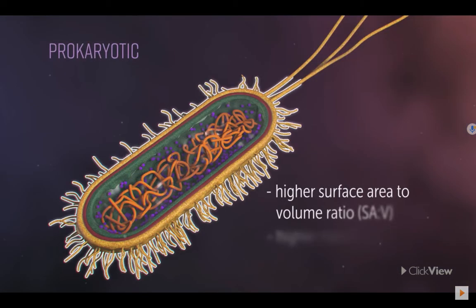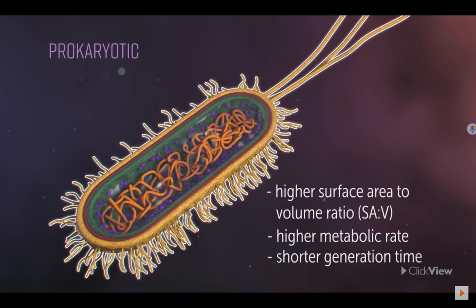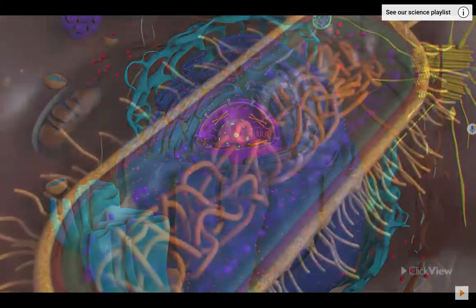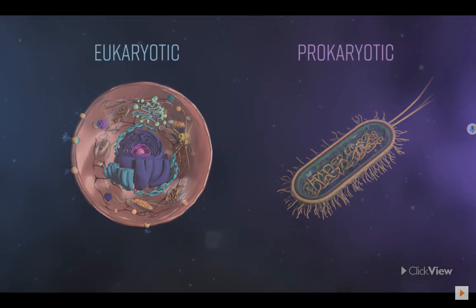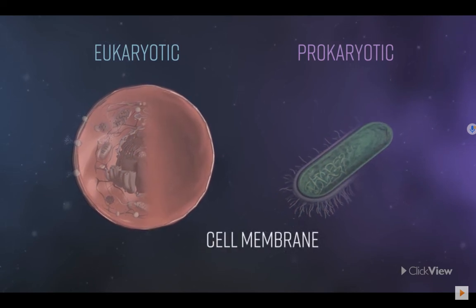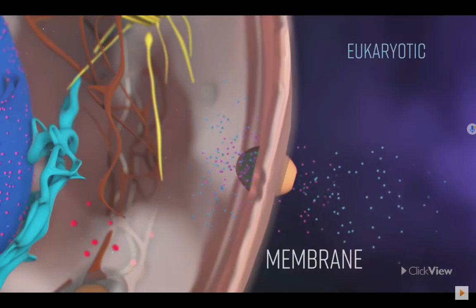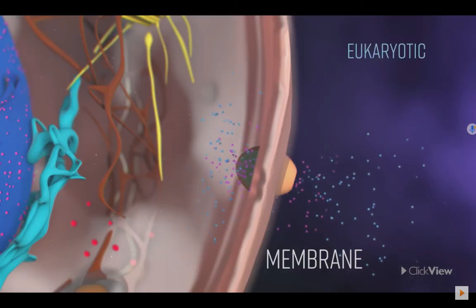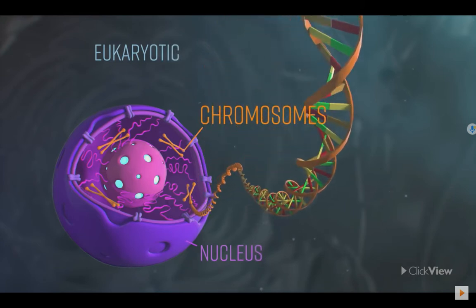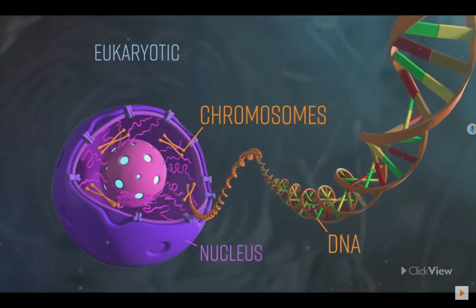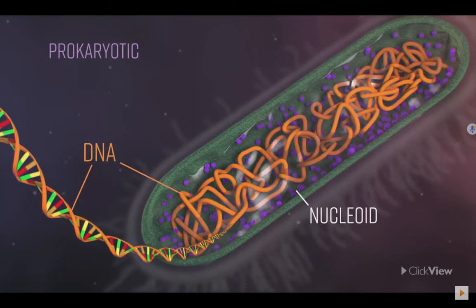Prokaryotic cells have a larger surface area to volume ratio than eukaryotic cells, which results in a higher metabolic rate, and therefore increased growth rate and shorter generation time. While eukaryotic and prokaryotic cells are quite different in their structure and processes, they do share similarities. Ribosomes are one feature they have in common, but both also have a cell membrane composed of phospholipids and proteins. Both types of cell also have DNA as the basis for their genes, and the genetic material regulates cell function and contains the coded information passed on to offspring.